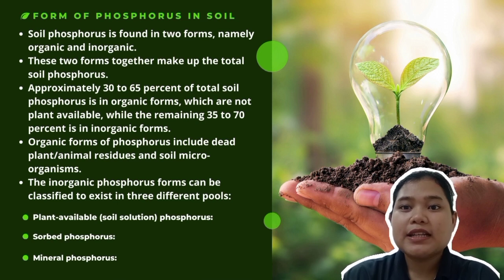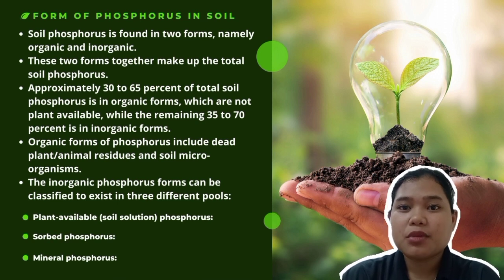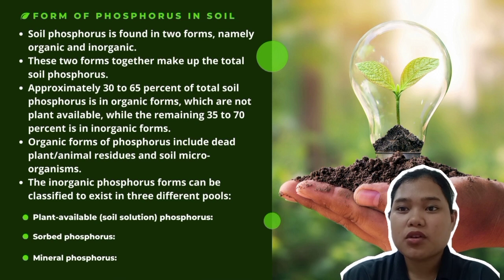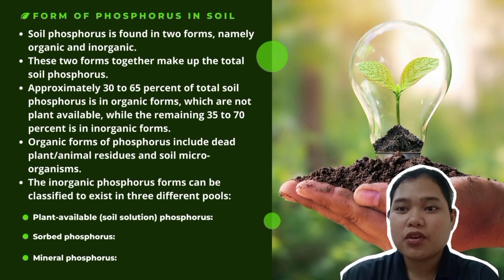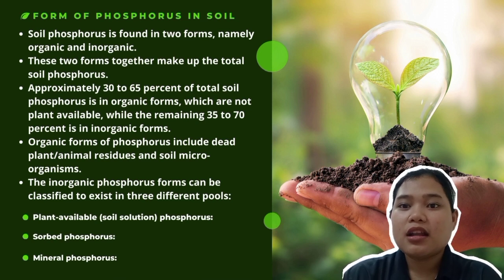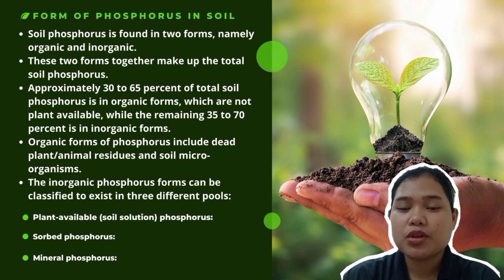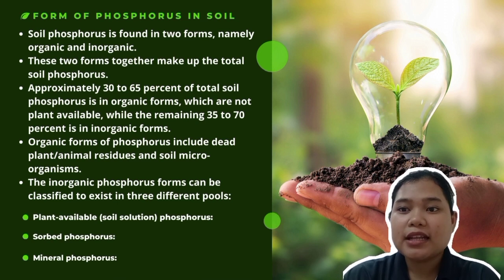The third pool is mineral phosphorus. This pool is comprised of primary and secondary phosphate minerals present in soil. Examples of primary phosphorus minerals include apatite, strengite and variscite. The secondary phosphorus minerals include calcium, iron and aluminium phosphates. The release of phosphorus from this pool is extremely slow and occurs when the minerals weather and dissolve in soil water.